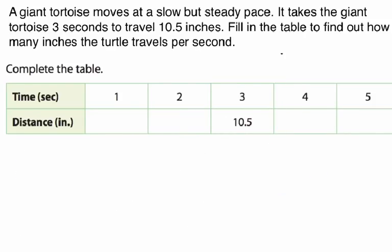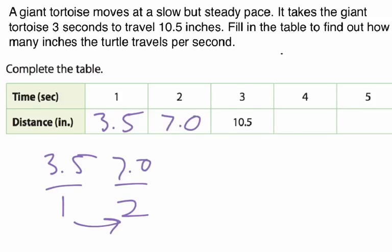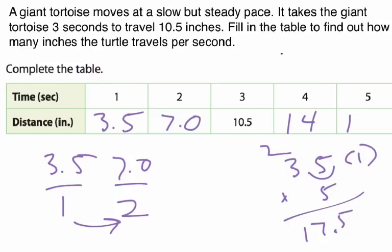So at one second, this turtle is going three point five inches. And then we can fill in the rest of the table. At two seconds, if it's three point five inches in one second, we would just multiply by two, and that would get us seven. In four seconds, we multiply by four, and that would get us fourteen. And then in five seconds, we multiply three point five times five. Five times five is twenty-five, carry the two, fifteen, sixteen, seventeen. It would be seventeen point five. So I basically used the unit rate to continue and fill out this table.